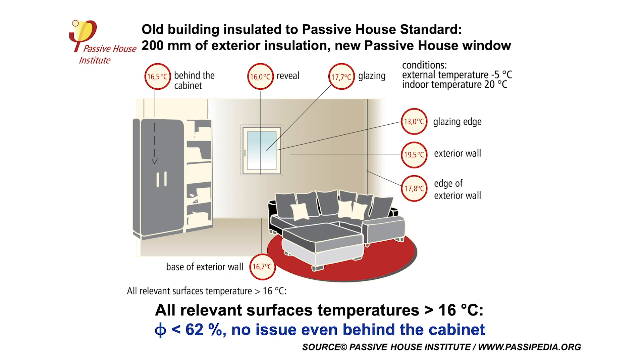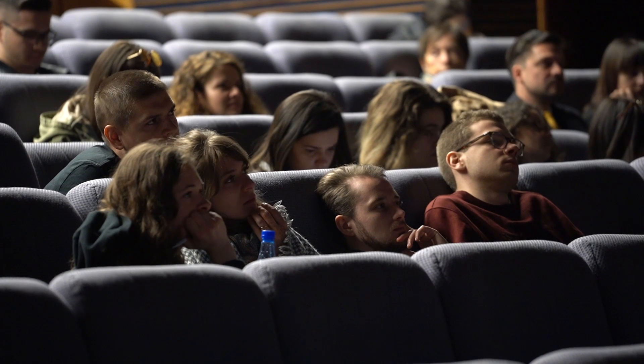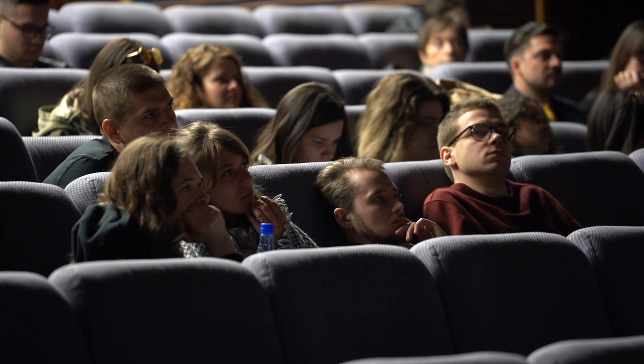Then we have an old building retrofitted with 200 millimeters of external insulation and new passive house windows with the previously mentioned parameters — and it accomplishes the interior comfort parameters.